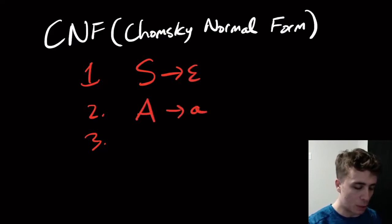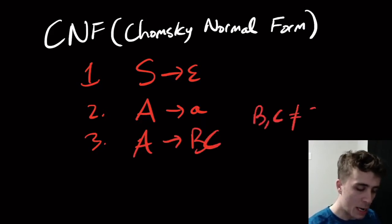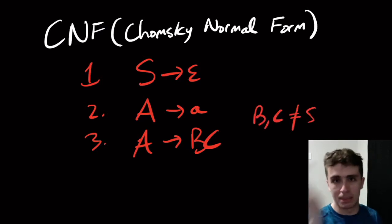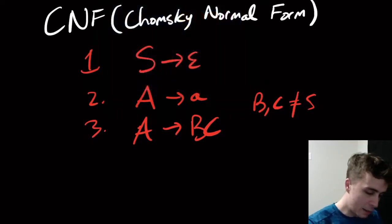The start variable goes to epsilon possibly. Any variable can go to a single terminal or any variable can go to two variables where the two variables are not the start variable. So you see me doing the little loopty thing to say that neither of the BC variables can make epsilon.